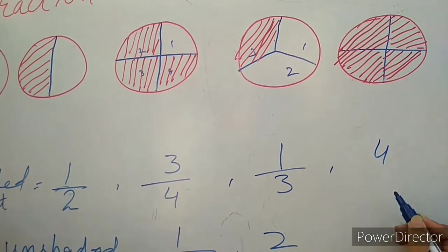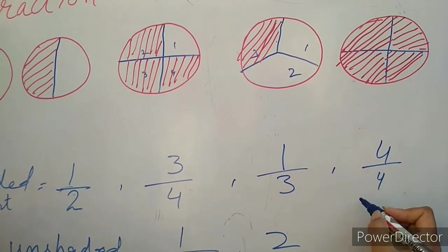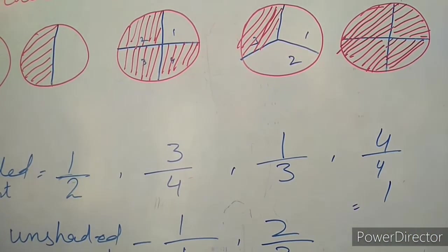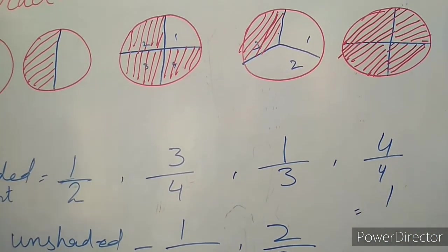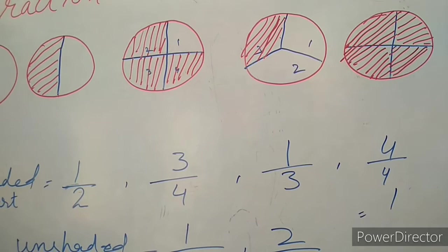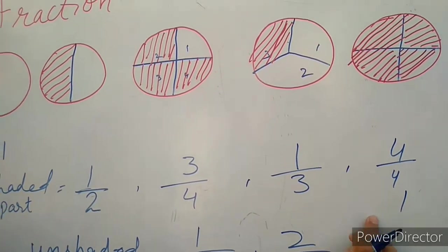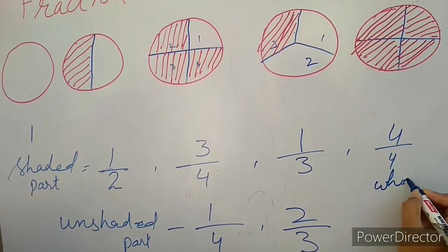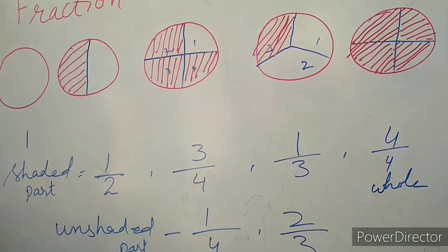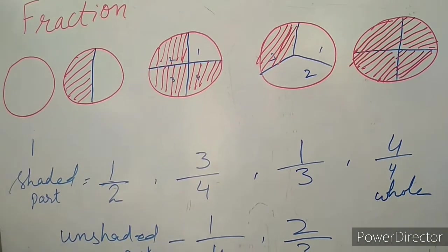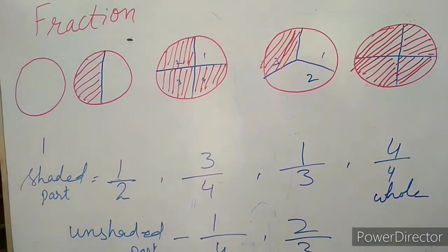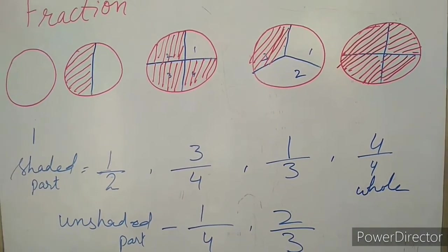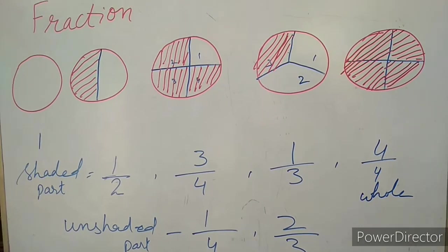In this circle, it is divided into four parts and all four parts are shaded, meaning the full circle is shaded — that represents a whole. So we say that a fraction is a number representing the part of a whole.